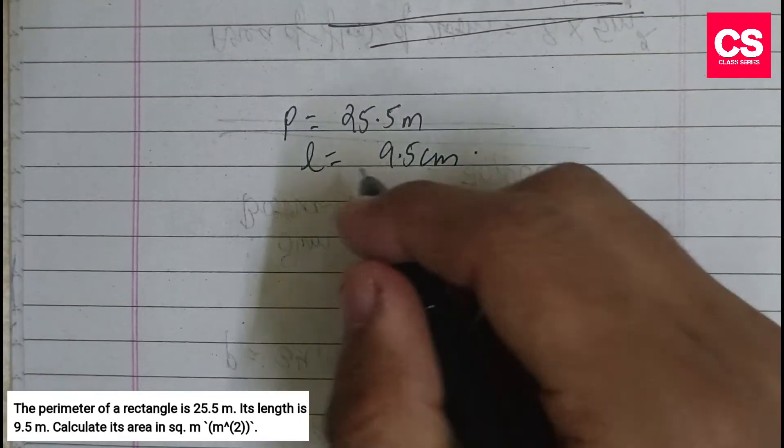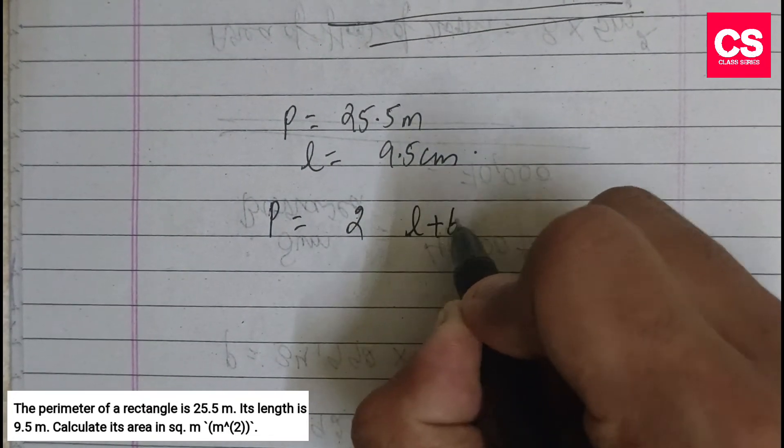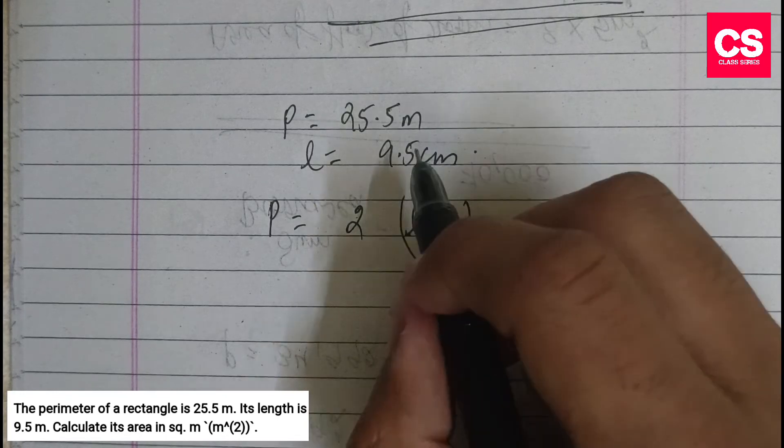Now we have the perimeter formula: perimeter is equal to 2 into length plus breadth. So we have to find the breadth.